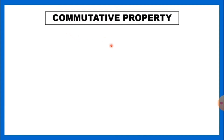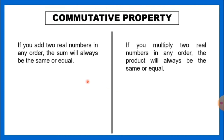The next property is the commutative property, and there are two operations we can apply: addition and multiplication. If you add two real numbers or integers in any order, the sum will always be the same. The pattern is a plus b equals b plus a — changing the order of the two integers will not affect the answer.